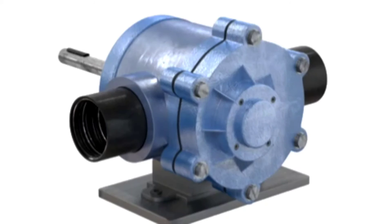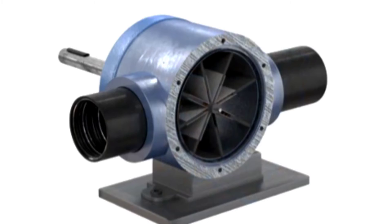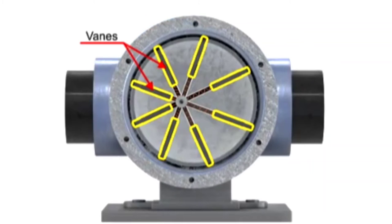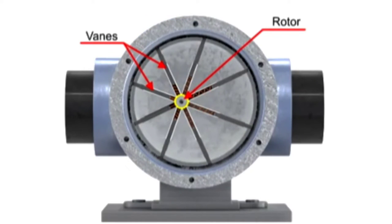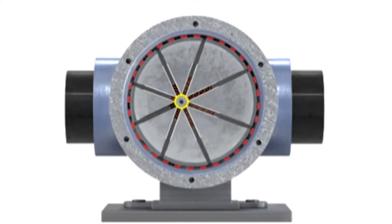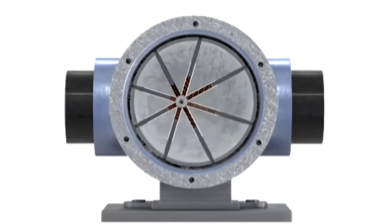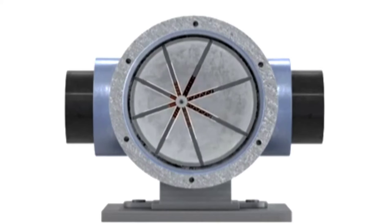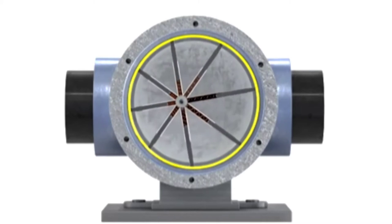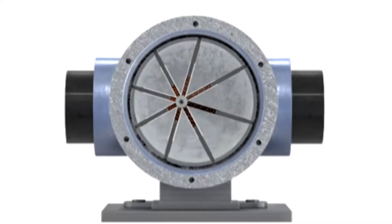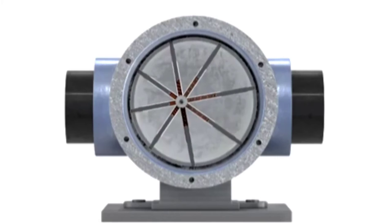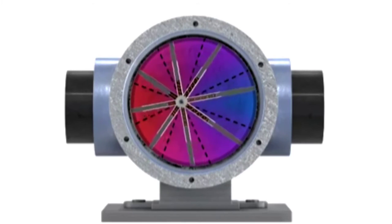A rotary vane pump is a positive displacement pump that consists of vanes mounted to a rotor. The vanes are on an off-center drive shaft. As the shaft rotates, the variable length vanes slide in and out to maintain contact with the pump housing. The tension in the vanes is maintained by either springs or hydraulic pressure. As the vanes rotate, they create chambers of varying sizes within the pump.